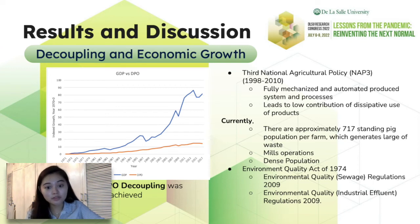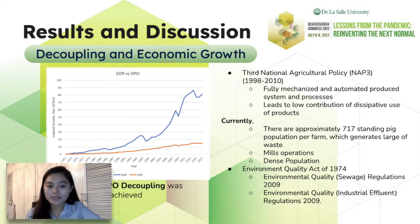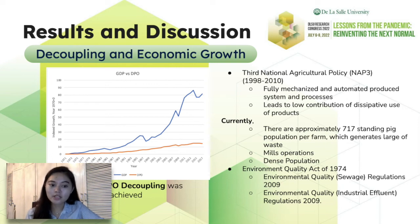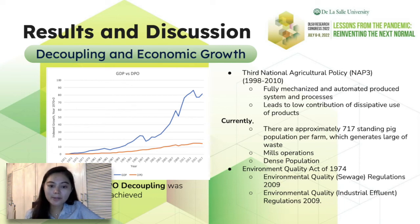To address emissions to water, which is part of the DPO of a country, the Environmental Quality Act of 1974 was created. This sets the standards of effluent discharge to be followed by various sectors. According to the Veterinary Services Department of Malaysia, there are approximately 717 standing pig population per farm, which generates a large amount of waste. Besides livestock, misoperations in palm oil production also impact the amount of BOD generated in Malaysia. The extremely dense population in urban centers also contributes to pollution in rivers. The Environmental Quality Act of 1974 is the primary legislative instrument governing water policy in Malaysia, including Environmental Quality Regulations 2009 and Environmental Quality Industrial Effluent Regulations 2009.